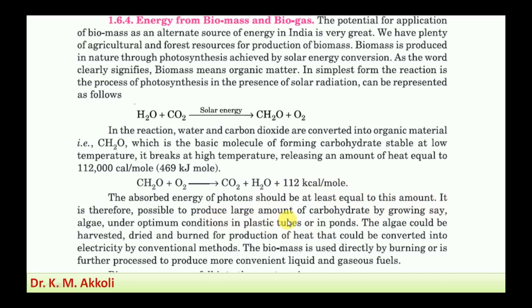It is therefore possible to produce large amounts of carbohydrates by growing algae under optimum conditions in plastic tubes or in ponds. We can grow algae under optimum conditions to absorb and capture solar energy in the form of organic matter, which can be used for heat release applications. The algae could be harvested, dried, and burned for production of heat, and that could be converted into electricity by conventional methods — by burning, boiling water to form steam, and expanding steam in a turbine to generate electricity.